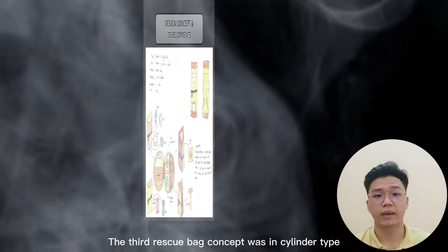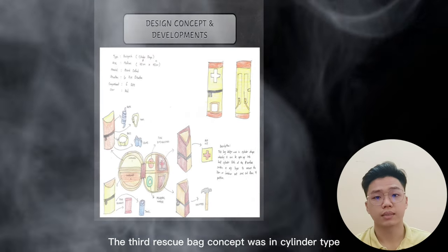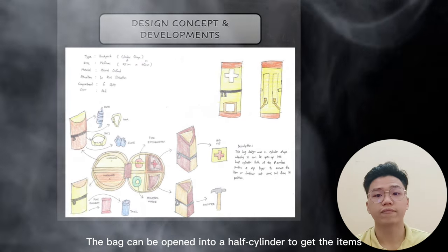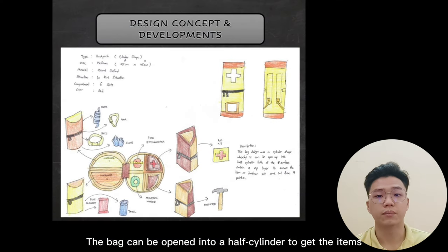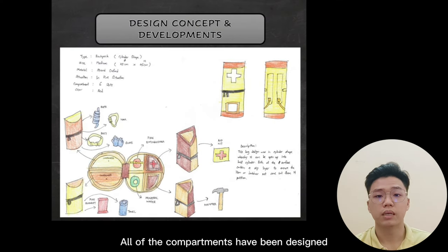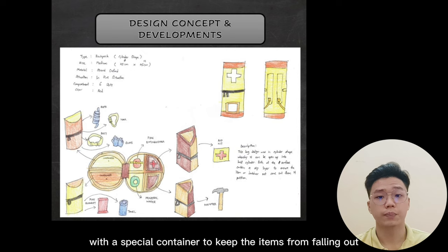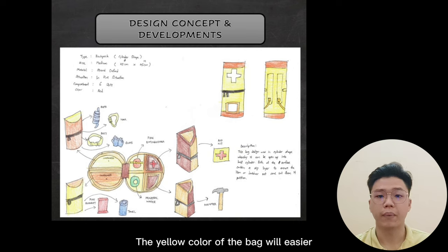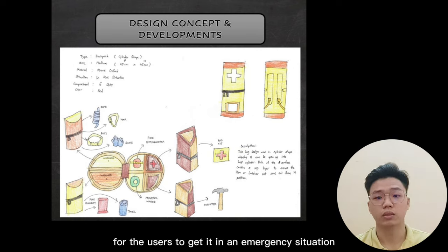The third rescue bag concept is a cylinder type. The bag opens into a half-cylinder to allow access to items. All compartments have been designed with special containers to keep items from falling out. Although it is cylinder-shaped, it is also a backpack type. The yellow color makes it easier for the user to locate it in an emergency situation.